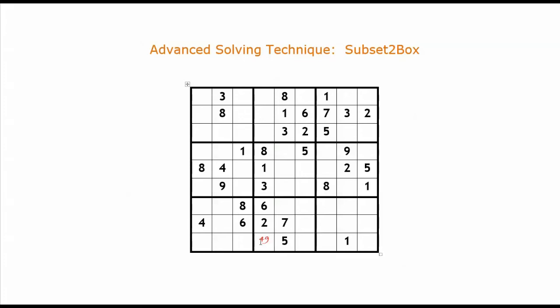We call four and nine the candidate numbers for the empty square. We do the same thing for other empty squares. For example, this empty square has candidate numbers four and nine. This empty square has candidate numbers one, three, four, nine. And this empty square has candidate numbers one, three, four, nine.